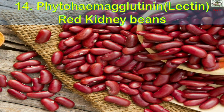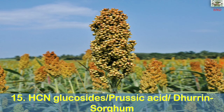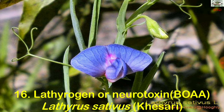Phytohaemagglutinin is a lectin present in red kidney beans. HCN glucosides, also known as prussic acid, include durin, which is present in sorghum. Lathyrogen, a neurotoxin, is found in Lathyrus sativus.